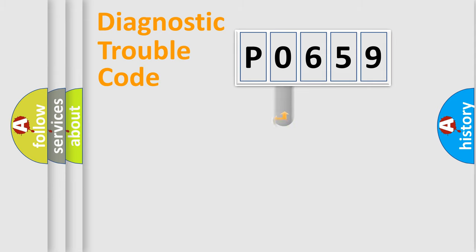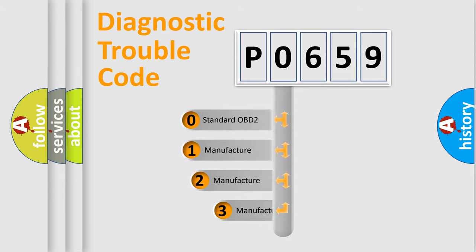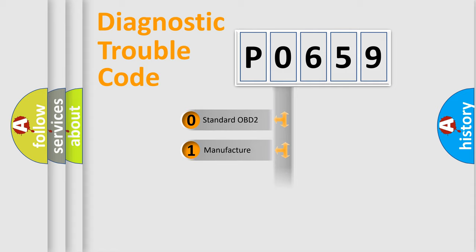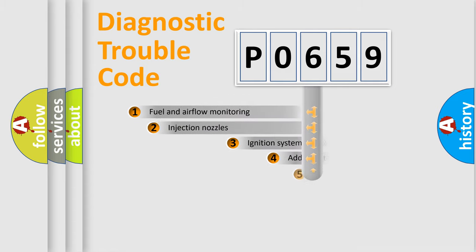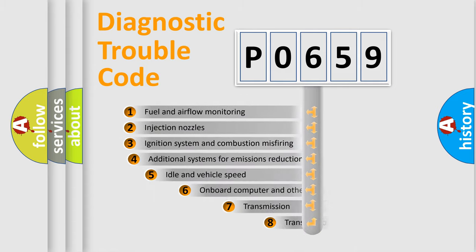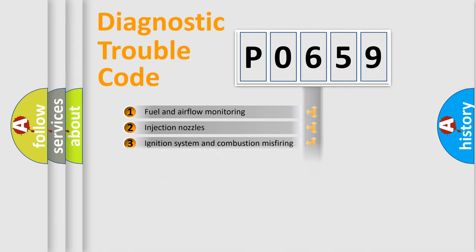This distribution is defined in the first character of the code. If the second character is expressed as zero, it is a standardized error. In the case of numbers 1, 2, 3, it is a more specific expression of a car-specific error. The third character specifies a subset of errors.